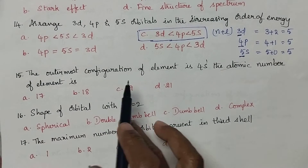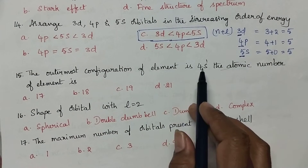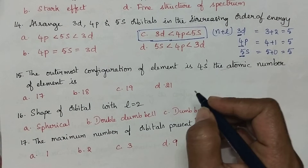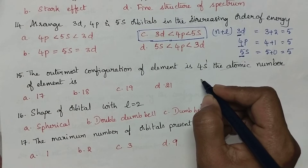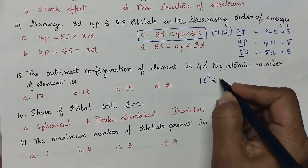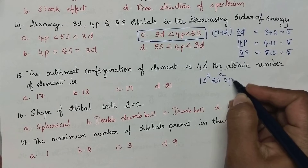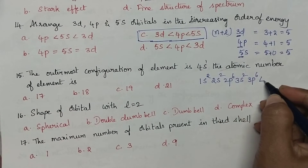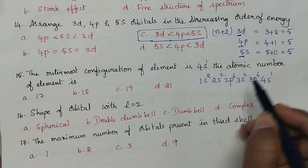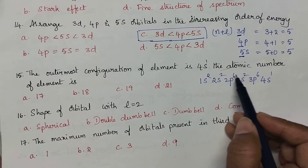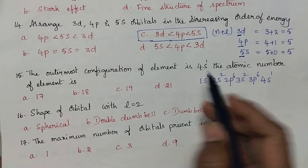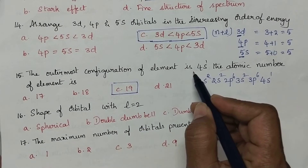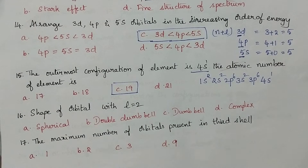The outermost configuration of an element is 4s1. The atomic number of the element is: we have to write the complete configuration, that is 1s2, 2s2, 2p6, 3s2, 3p6 and 4s1. On the whole, 10 plus 9, so 19 is the atomic number of the element with 4s1 as the outermost configuration.